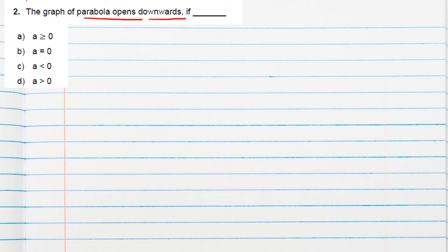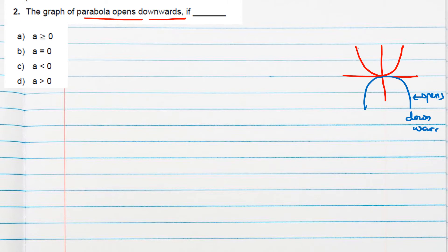Question 2: the graph of a parabola opens downwards if — now in your class 10 syllabus you will find two types of parabola. One type opens upwards and another opens downwards. We want to find the value of 'a' when the parabola opens downward, so I'll take a random example here.